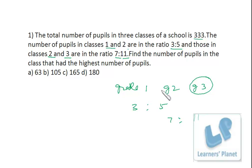Now, the very simple and sweet method is your answer must be a multiple of 11, because the ratio between grade 2 and grade 3 is 7 is to 11. So in any case, the number of students in grade 3 must be a multiple of 11. So there is only one option, that is 165.